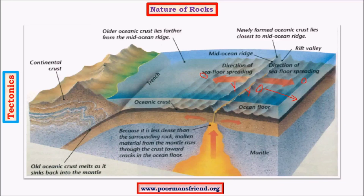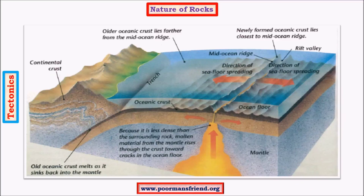One might assume that ocean floors, being constantly underwater, would have formed much earlier than continents, so ocean rocks should be much older. But in reality, scientists observed that rocks of the ocean floor are much younger than continental rocks. This is because of constant outpouring of magma which spreads across large distances, solidifies, and forms younger rocks. Continental rocks have been settled for millions of years and are comparatively older. This confirms that there is continuous volcanic activity on the ocean floor compared to the continents.